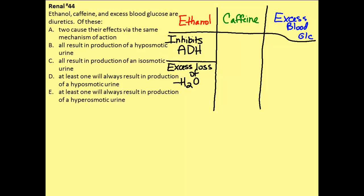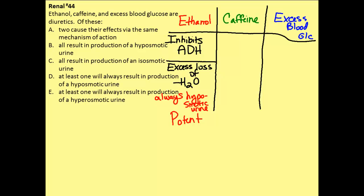ADH is very potent, so we're going to see that ethanol has a potent diuretic effect. Because we're losing all of this water, this always results in a hypoosmotic urine solution. We're going to have a very dilute urine whenever someone has been drinking ethanol, with a lot of water in the urine that's produced.